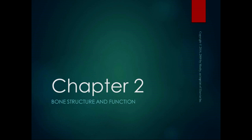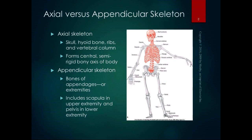We're going to talk about bones first, and hopefully this will be a review from Anatomy and Physiology. We'll differentiate between the axial versus the appendicular skeleton. In this diagram from the book, the axial skeleton is in red and the appendicular skeleton is in gray. The axial skeleton is the skull, the hyoid bone, ribs, and vertebral column, and it forms the central semi-rigid bony axis of the body. Anything that's really important is encased in bone — like your brain, heart and lungs, and spinal column. The axial skeleton provides proximal stability, and you need proximal stability for distal mobility.